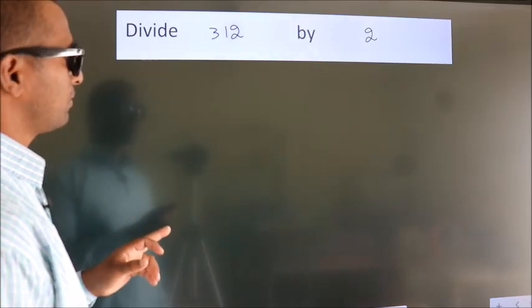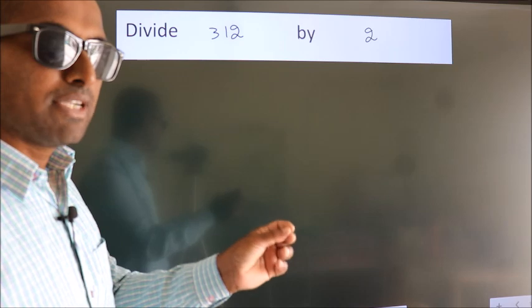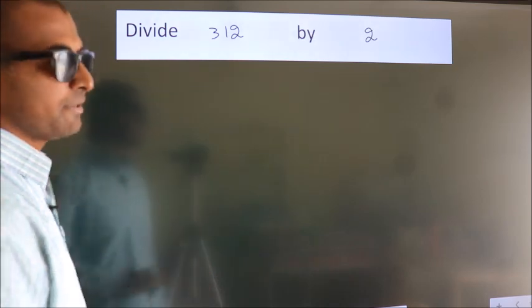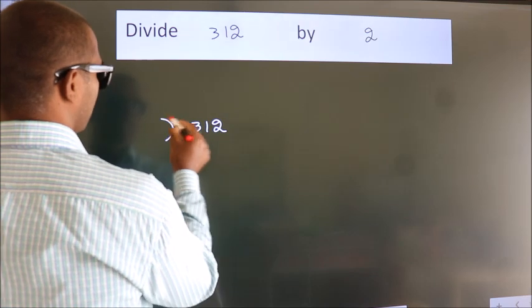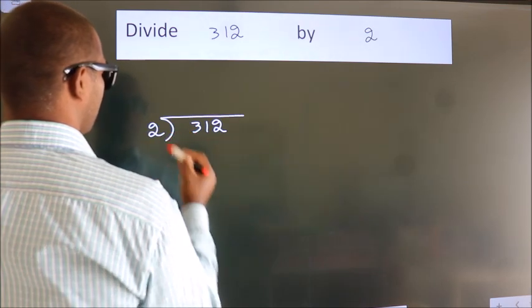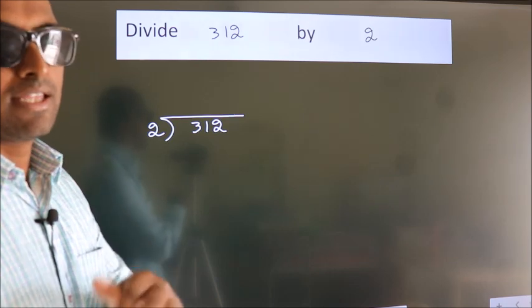Divide 312 by 2. To do this division, we should frame it in this way. 312 here, 2 here. This is step 1. Next,